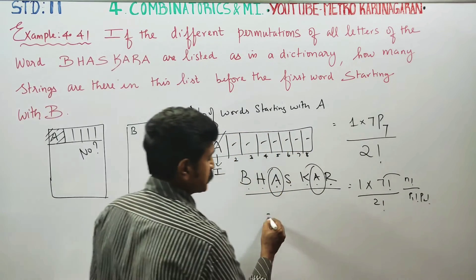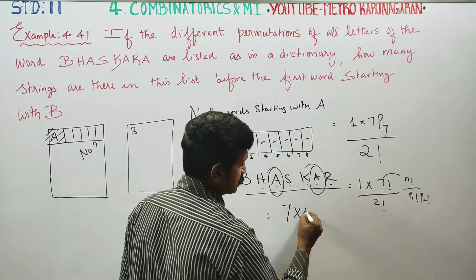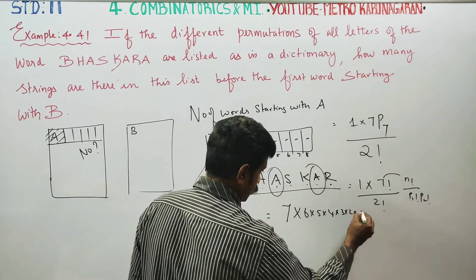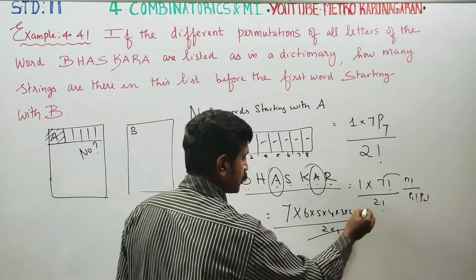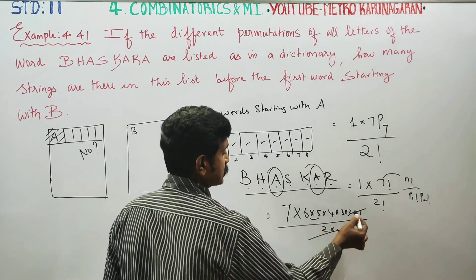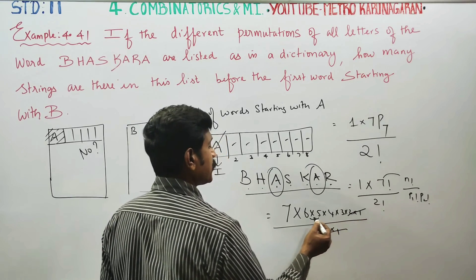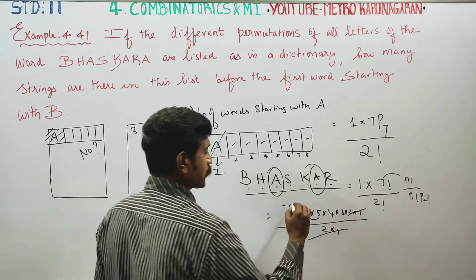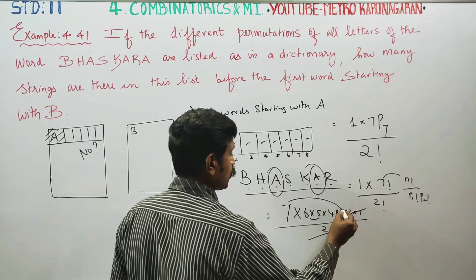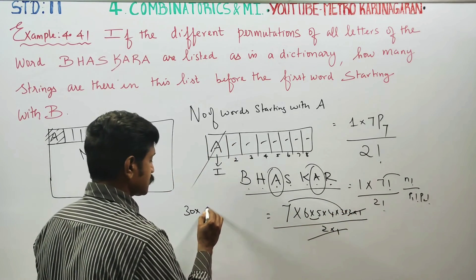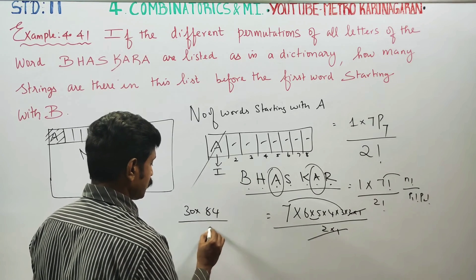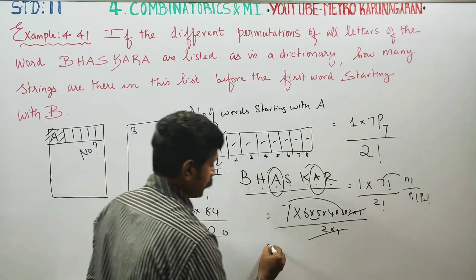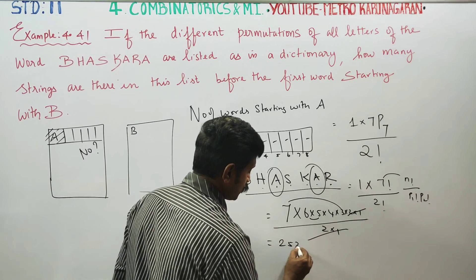7 factorial: 7 into 6 into 5 into 4 into 3 into 2 into 1, by 2 factorial, 2 into 1. After cancelling 2 into 1, we get 7, 6, 5 is 30, 3s are 21, 21 into 4 is 84. If you multiply this, the answer is 2520.